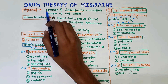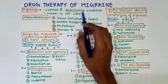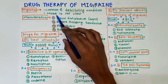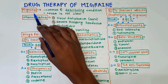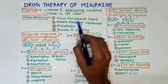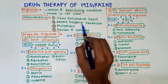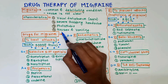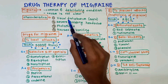Migraine is a common debilitating condition and the exact cause is not clear. The characteristics of a migraine attack include visual disturbance or aura, severe throbbing headache, photophobia, nausea, and vomiting. These are the common characteristics of a migraine attack.